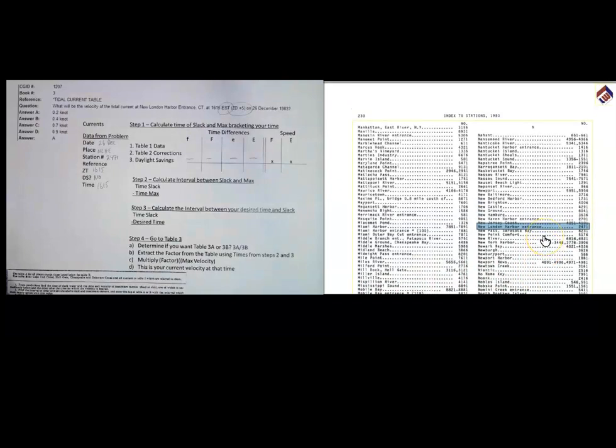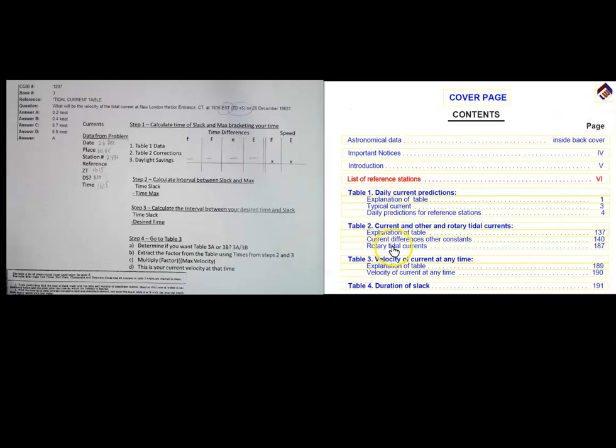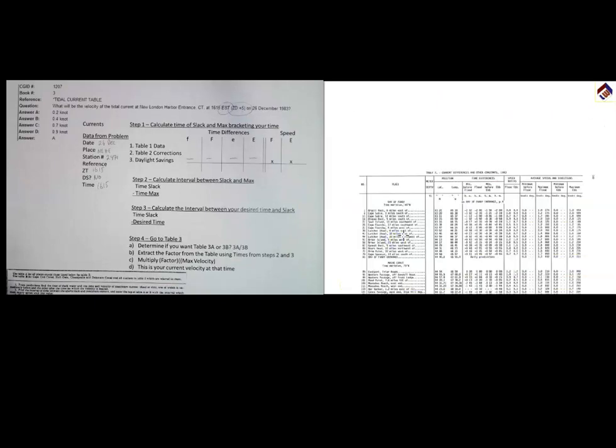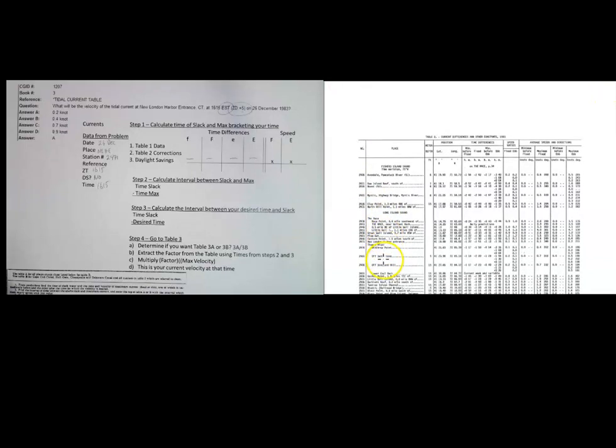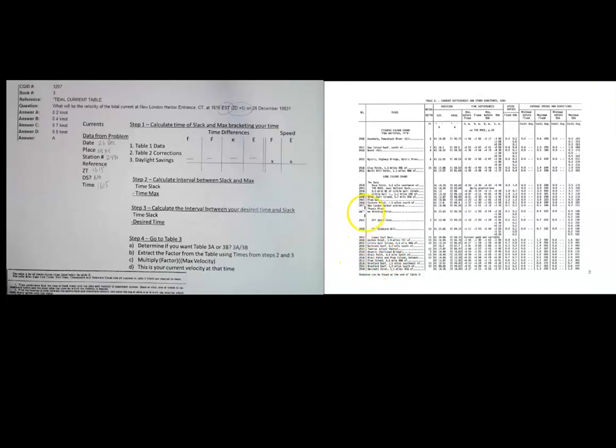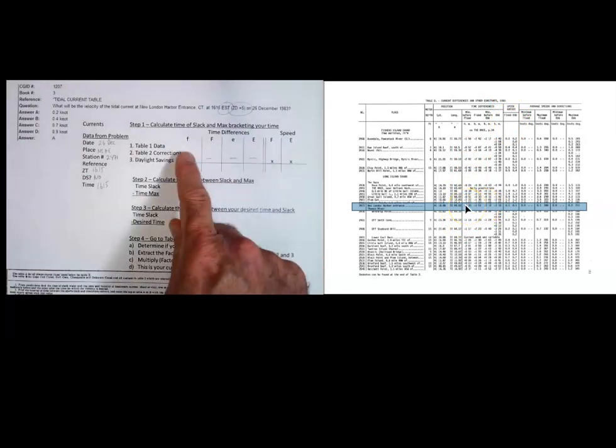The next thing I'm going to do is actually go get the data for station 2471, and that's from Table 2. So I'll go back here. Table 2, Current Differences, and I'm looking for station 2471. So I'm going to scroll through these. Getting closer. So 2471, here it is right here. Here's New London. New London Harbor Entrance. That's the row that I want right there. And what I'm going to do now is collect the data for these four columns: Min before flood, flood, Min before ebb, ebb. And then I'm also going to collect the data for these two columns. So it's really these six columns.